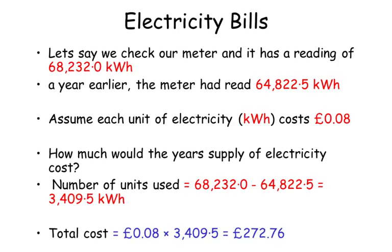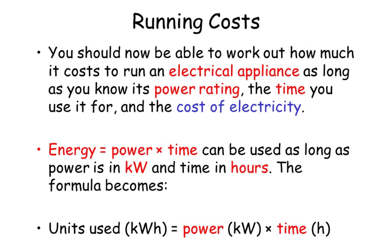To work out how much that's going to cost, we know the price the electricity company sets — the current rate is about 8 pence per kilowatt hour. We multiply the amount used by the price of one kilowatt hour and we get a final answer of £272.76.